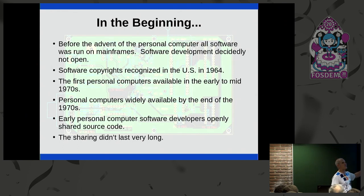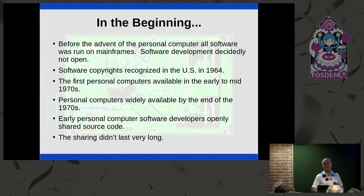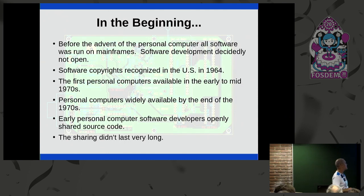Software development back then — the only people that worked on software collaboratively were people who worked for the government, universities, or large corporations like IBM. But it was pretty obvious even back then, in the very early days of computing, that software copyrights were coming. So the big companies lobbied major governments. In 1964, software copyrights were recognized in the US, and pretty much the rest of the world followed suit pretty quickly.